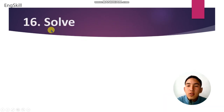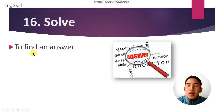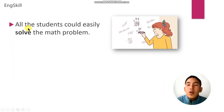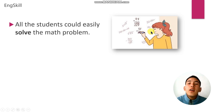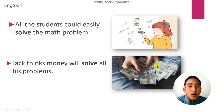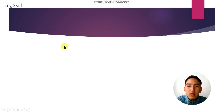Number 16 is solve. Solve means to find an answer. For example: all the students could easily solve the math problem. Example number 2: Jack thinks money will solve all his problems — but that is not true.